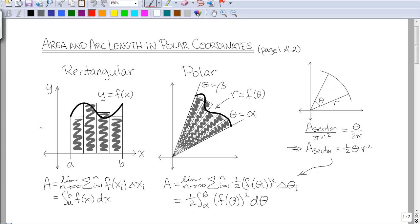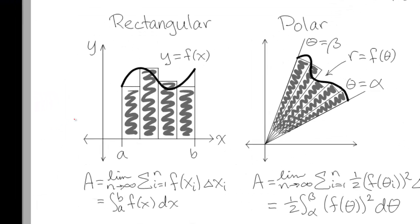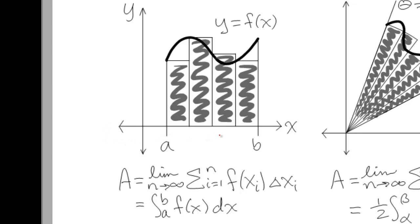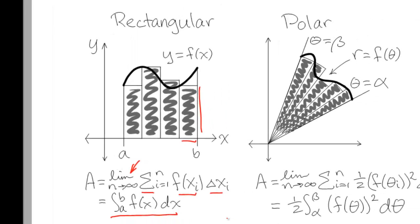In your notes, there's an illustration of each of these cases. With rectangular coordinates, when we estimate the area under a curve using rectangles, the area of each rectangle is simply the base times the height — that's f of x times delta x, added up for all of the different rectangles. Then we take the limit as n goes to infinity or delta x goes to zero, which gives us our integral from a to b of f of x dx for area.